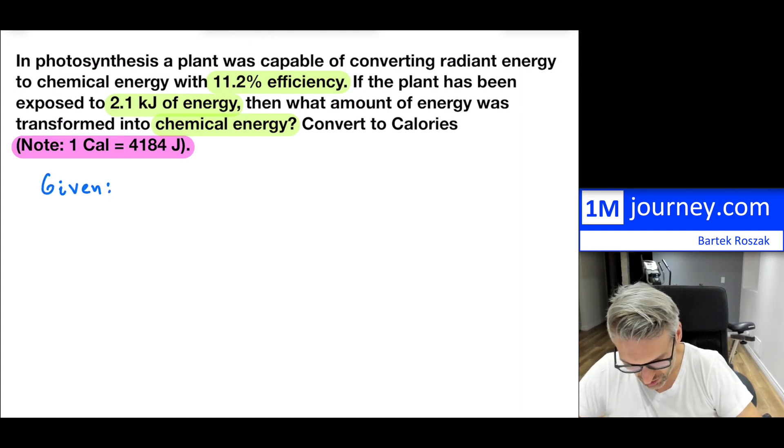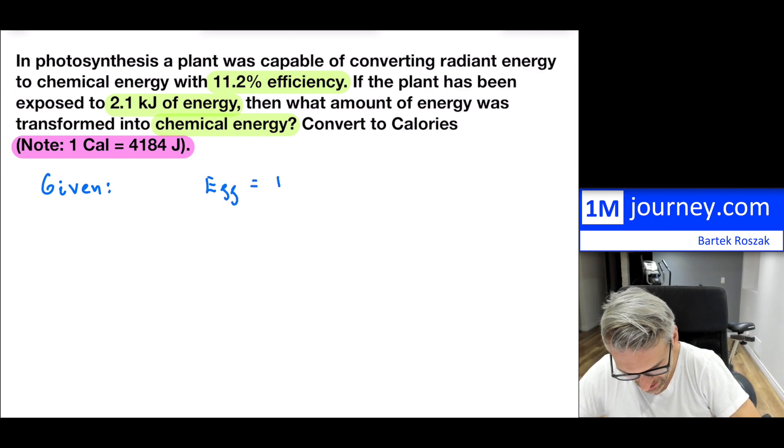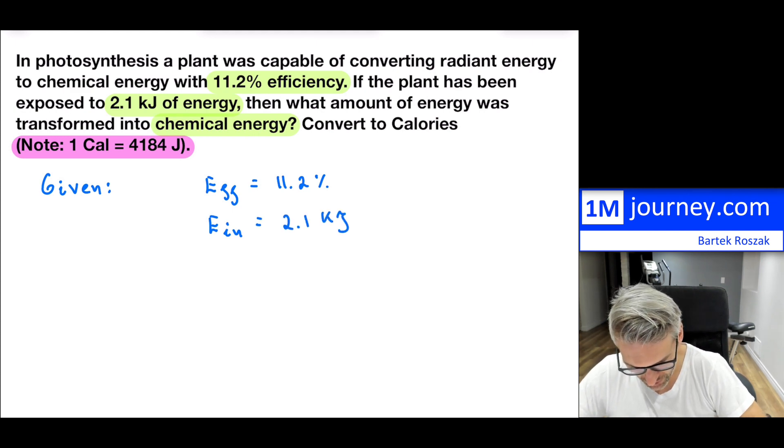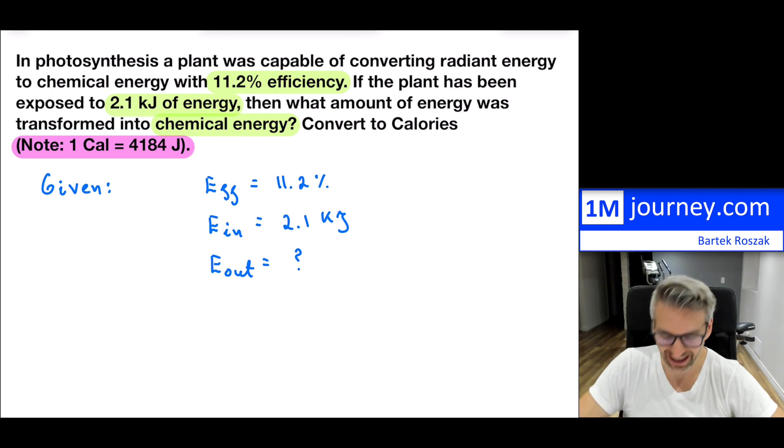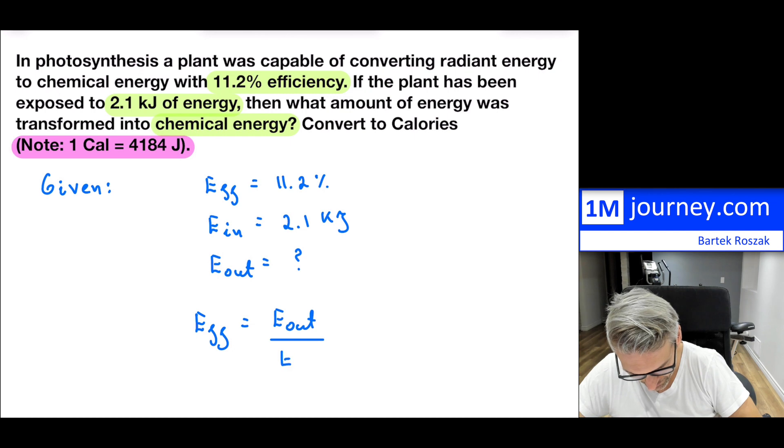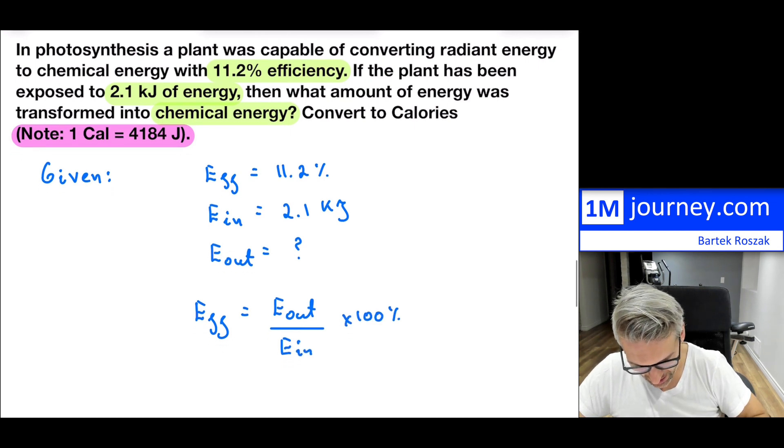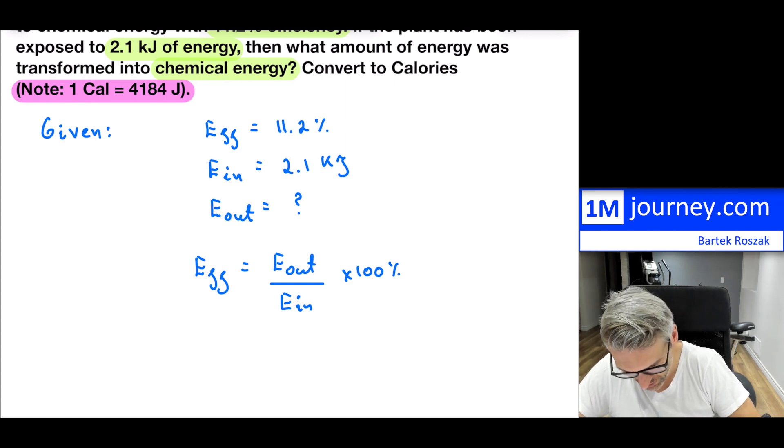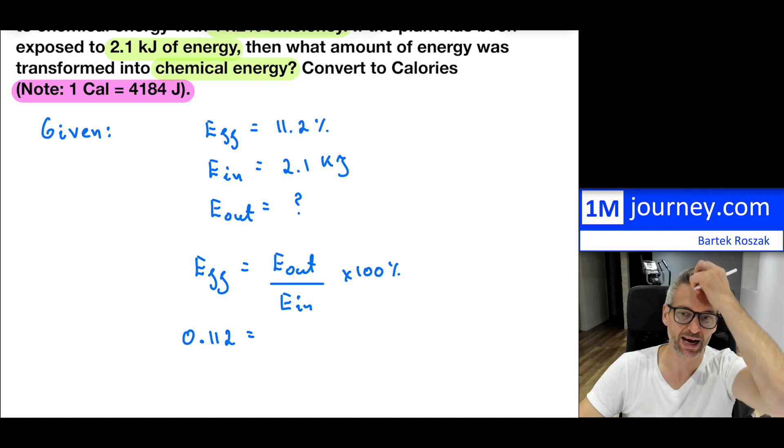So given pieces of information. So what we have is now we are given efficiency. So the efficiency is 11.2%. We are given, so notice that the energy in, that is coming in is 2.1 kilojoules. And what we're interested in is the energy out, so now the energy out in this case is really the energy which is going to be stored into chemical energy. So that's the desired energy. So if we substitute this back into our formula, so efficiency, so again, this is energy out all over energy in, times 100%. Now the 100% is going to change back to that 11%. So it's going to be 11.2 divided by that 100%. So that's going to be 0.112.